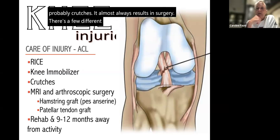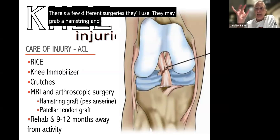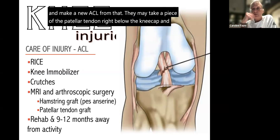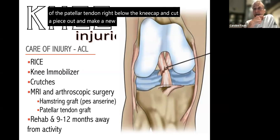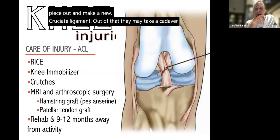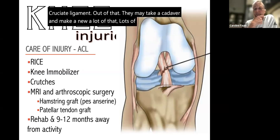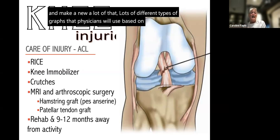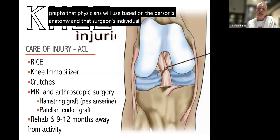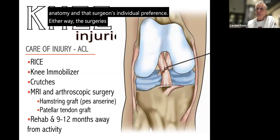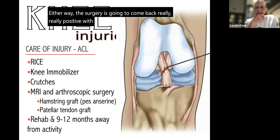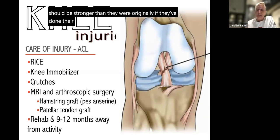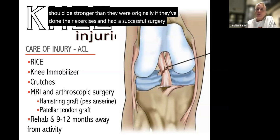Care of ACL injury: RICE, knee support, and probably crutches. Surgery almost always results. Different surgical options include using a piece of the hamstring, a piece of the patellar tendon, or a cadaver graft to construct a new ACL — the choice depends on the person's anatomy and the surgeon's preference. Either way, with good rehabilitation the athlete should come back stronger than before. Expect nine to twelve months away from activity.